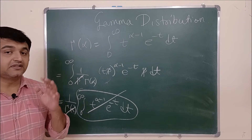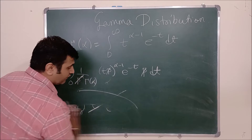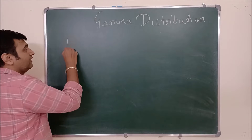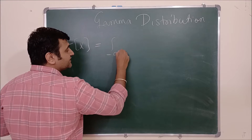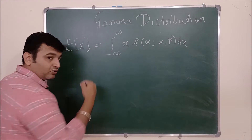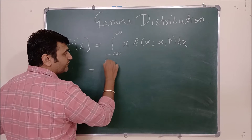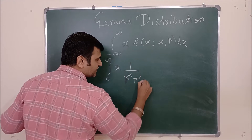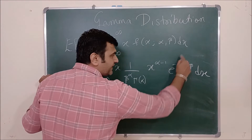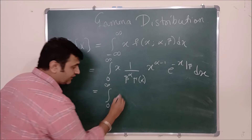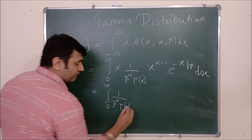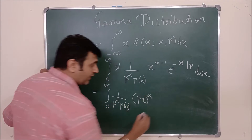Now we find the mean and variance. The expected value E[X] = ∫_{−∞}^{∞} x · f(x) dx. Since f(x) = 0 for x < 0, this equals ∫₀^∞ x · (1 / β^α · Γ(α)) · x^(α−1) · e^(−x/β) dx. Using the same substitution x/β = t, the limits remain 0 to ∞, and x^(α−1) · x = x^α becomes (βt)^α.